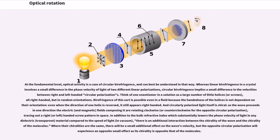Think of one enantiomer in a solution as a large number of little helices, all right-handed, but in random orientations. Birefringence of this sort is possible even in a fluid because the handedness of the helices is not dependent on their orientation; even when the direction of one helix is reversed, it still appears right-handed. And circularly polarized light itself is chiral, as the wave proceeds in one direction the electric fields composing it are rotating clockwise, tracing out a right-handed screw pattern in space. In addition to the bulk refractive index which substantially lowers the phase velocity of light in any dielectric material compared to the speed of light, there is an additional interaction between the chirality of the wave and the chirality of the molecules. Where their chiralities are the same, there will be a small additional effect on the wave's velocity, but the opposite circular polarization will experience an opposite small effect as its chirality is opposite that of the molecules.